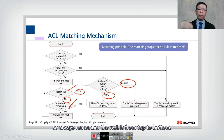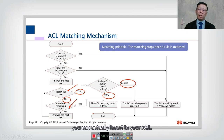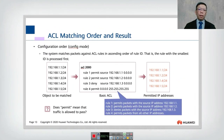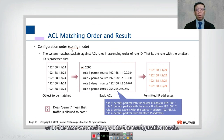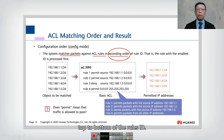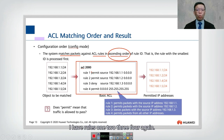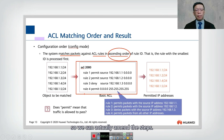This is how ACL rules are matched — always from top to bottom. That's why rules are numbered with steps like 5, 10, 15, 20: so that in between, if you miss out some ACL entries, you can actually insert them into your ACL. The system matches the packet against ACL rules in ascending order, meaning the rule with the smallest ID is processed first.